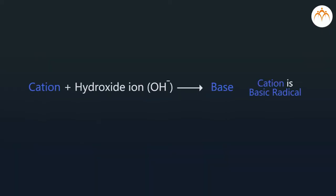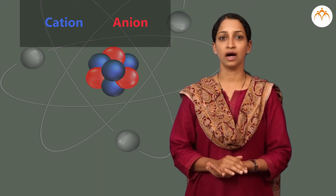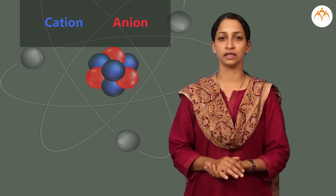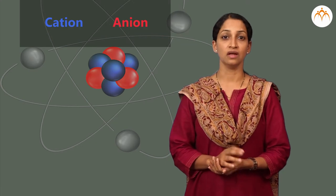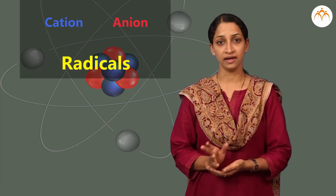Cation plus hydroxide gives base, so cation is a basic radical. Anion plus hydrogen ion gives acid, so anion is an acidic radical. Cations and anions are the components that take part independently in chemical reactions. Therefore, they are called radicals.